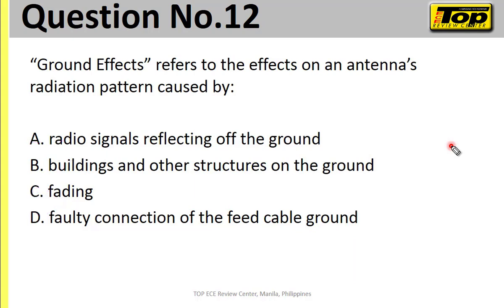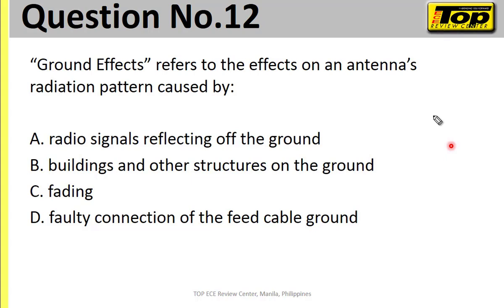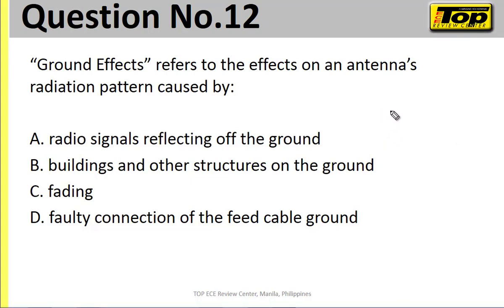Now we move to number 12. The question: 'Ground effects refers to the effects on the antenna's radiation pattern caused by what?' The ground has a real effect on the antenna. Ground effects occur on horizontal antennas, while for vertical antennas, the ground serves as a mirror image. For horizontal antennas, it depends on how high the antenna is from the ground.